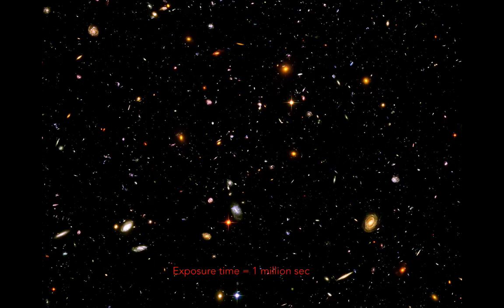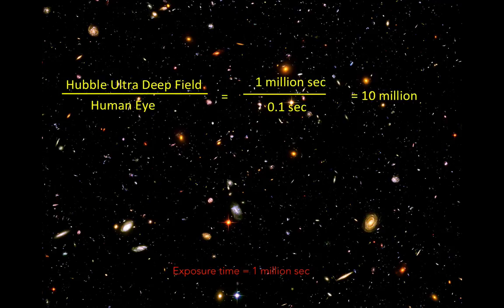The total exposure time required to make this image was just under one million seconds. Remember how I said that the human eye reads out every tenth of a second? Well, if we divide one million seconds by 0.1 seconds, you get ten million. This tells us that this exposure took ten million times longer to collect than the images collected by your eye. It reveals the incredible power of an astronomical camera mounted to the back of a telescope.